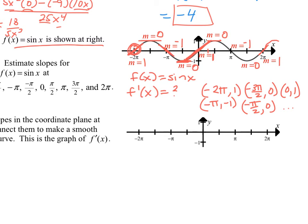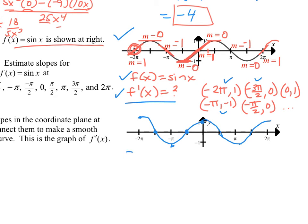Now, if f of x equals the sine, is there a way to represent f prime as a function? If I plot these slope values — at negative 2π I got 1, at negative 3π/2 I got 0, at negative π/2 it's negative 1, then 0, then 1 — what does this derivative graph look like? If you said cosine, you are correct. So the function for f prime would be cosine of x: the derivative of sine of x is cosine of x.